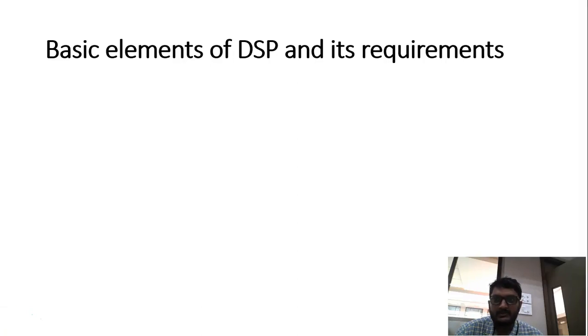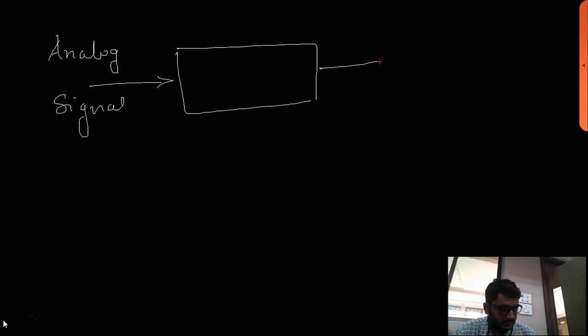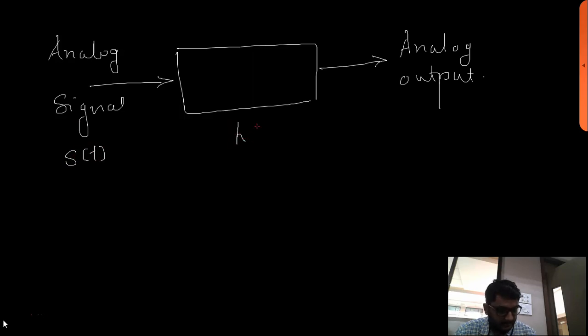Hello friends. The next topic we are going to see is basic elements of digital signal processing. Before that we should know what is the basic block diagram of signal processing. When we want to do signal processing, we are going to get an analog signal. There will be a block which is going to process that signal. If the input signal is s, the impulse response of the block is h, then the output will be s convolved with h.